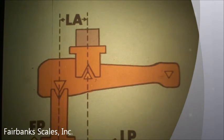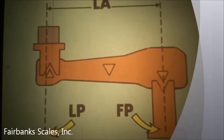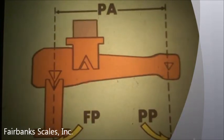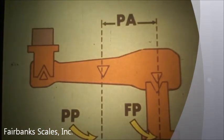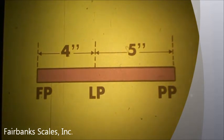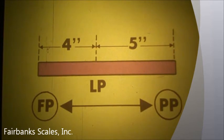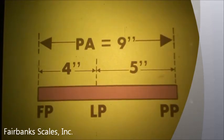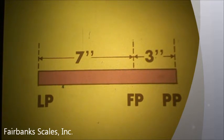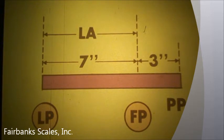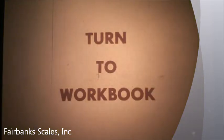The load arm is always the distance between the fulcrum point and the load point, regardless of where they are located on the lever. The power arm is always the distance between the fulcrum point and the power point, regardless of where they are located on the lever. In this example, the power arm is nine inches and the load arm is seven inches. Stop the tape and do the exercises in section one of your workbook to review the information we've covered so far.